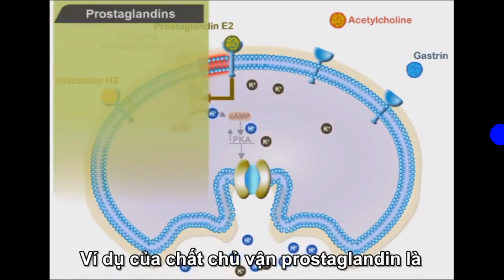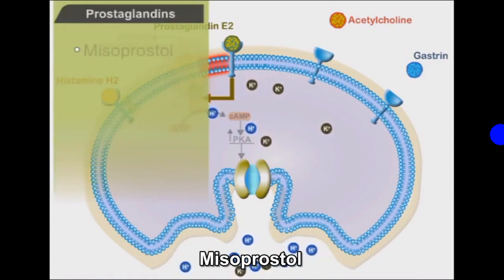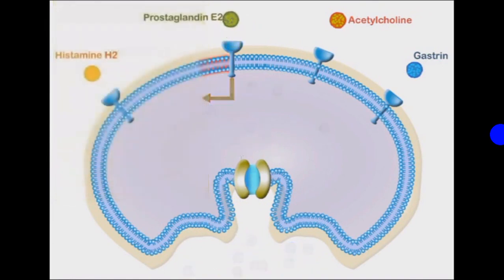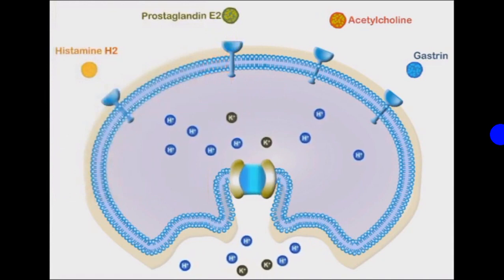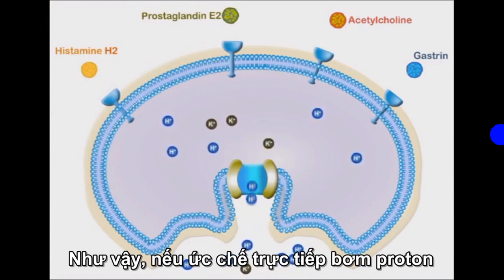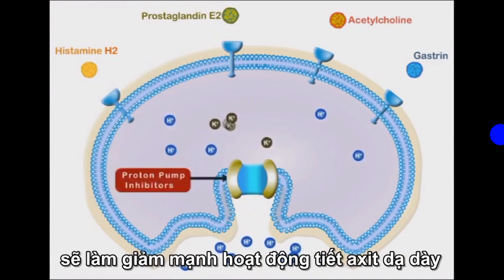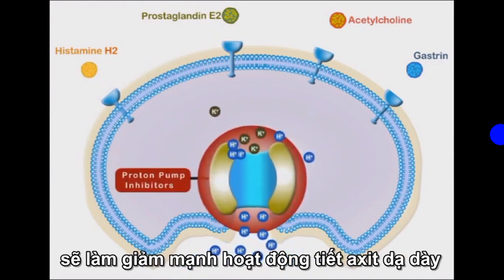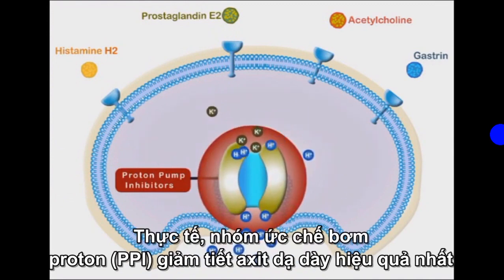The main example of a prostaglandin agonist is misoprostol. Logically, direct closure of proton pumps will significantly decrease gastric acid secretion. In fact, proton pump inhibitors are the most effective suppressors of gastric acid secretion.